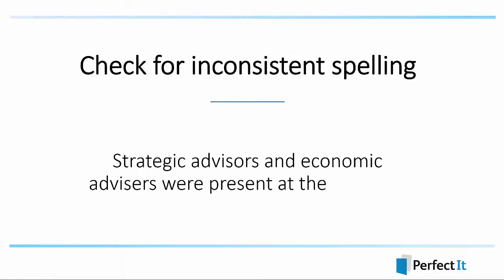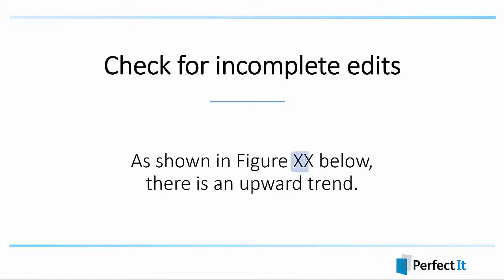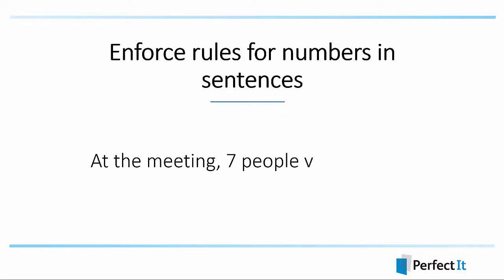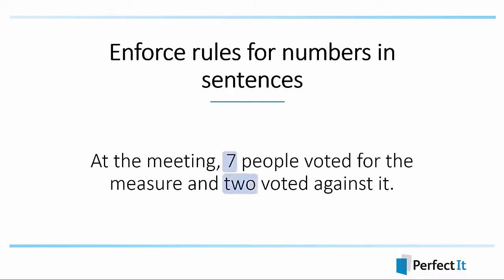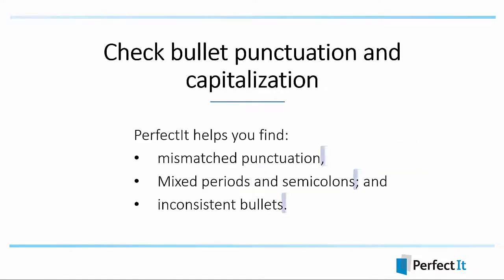You can use PerfectIt to find inconsistent spelling, spot bad typing errors including mistakes that spell checkers won't find, and quality control for missing edits such as words and phrases left in text. Make sure capitalization is consistent and that numbers in sentences are correct. Check that all abbreviations are defined, then check bullet punctuation and capitalization.